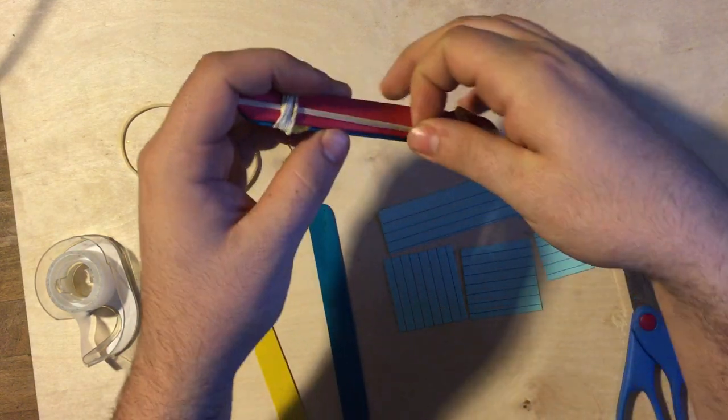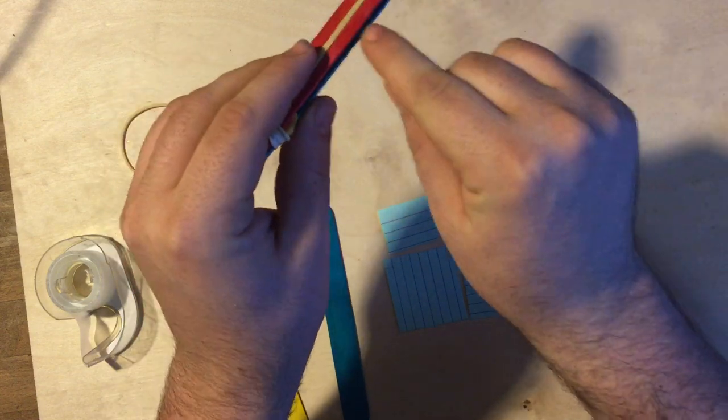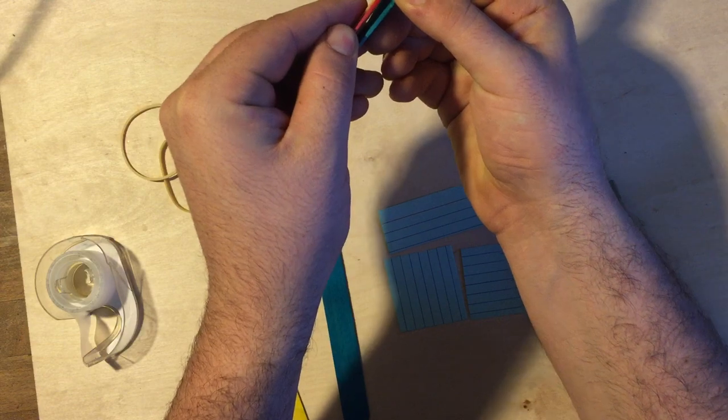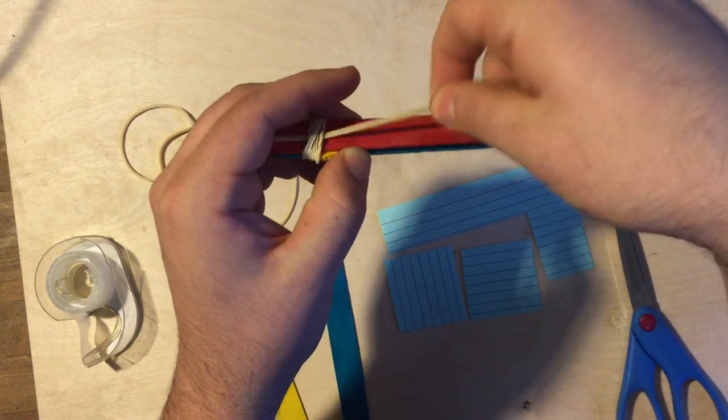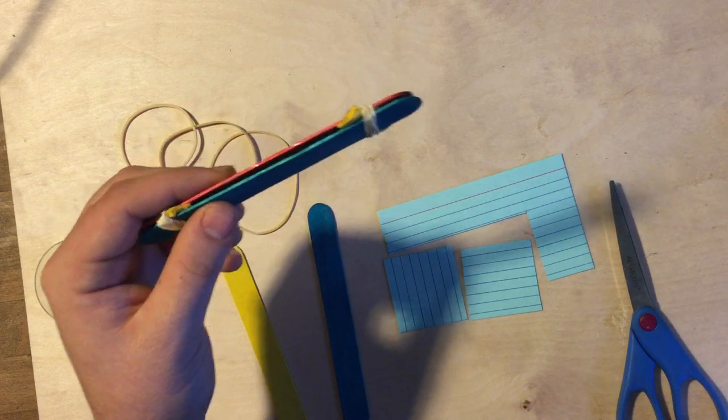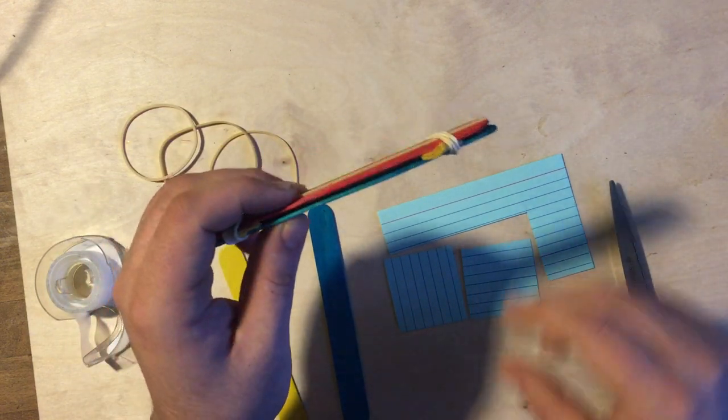So how this works is we have this one rubber band that's wrapped around one of these Popsicle Sticks and it's also going between them here. When we blow between the Popsicle Sticks the rubber band vibrates very quickly producing sound and the harder we blow into it the higher that sound is going to be.